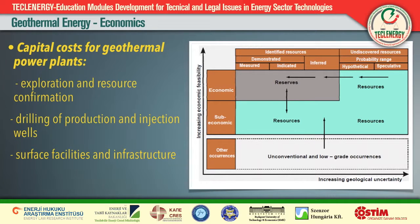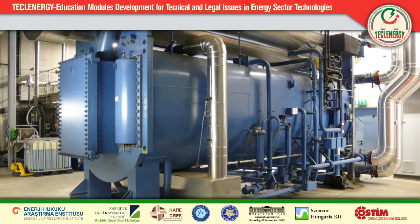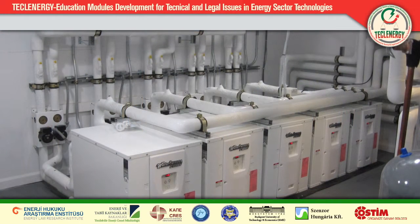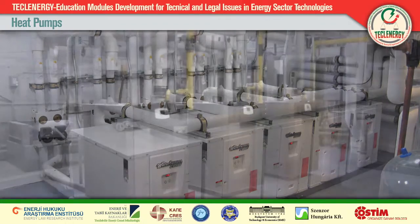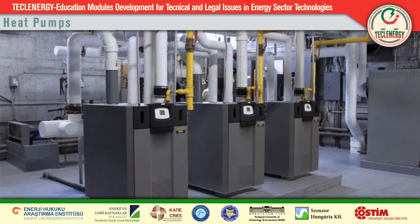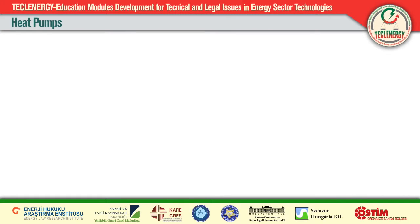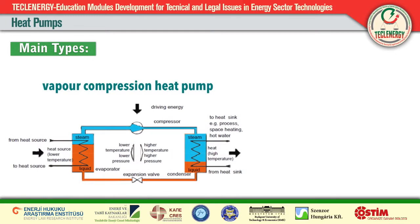Heat pumps transport heat from a low to a high temperature level using a working fluid, with a much smaller energy input than the heat energy delivered at the higher temperature level. Heat pumps have several advantages: they consume less primary energy than conventional heating systems, resulting also in the reduction of polluting gas emissions such as carbon dioxide, sulfur dioxide, and nitrogen oxides. The fuel consumption of an absorption or gas engine heat pump is about 35 percent less than that of a conventional boiler. Heat pumps are more efficient because they use renewable energy in the form of low-temperature heat.